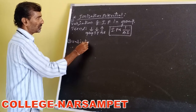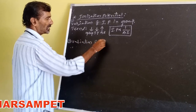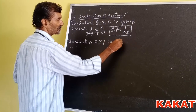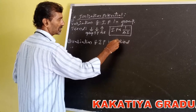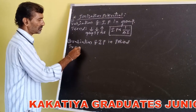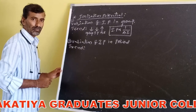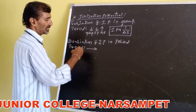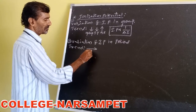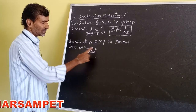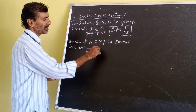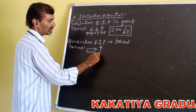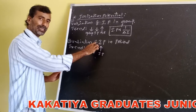Next, variation of ionization potential values in the period. In the period, from left to right, ionization potential values increase.